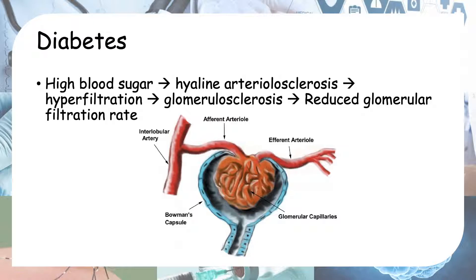Next, let's look at how diabetes causes chronic kidney disease. In diabetes, there is high blood sugar instead of high blood pressure. As a result of this high blood sugar, there's something known as hyaline arteriolosclerosis — a hardening of your arteries. The high blood sugar damages your arteries, and notably, this hyaline arteriolosclerosis affects your efferent arteriole more than the afferent.